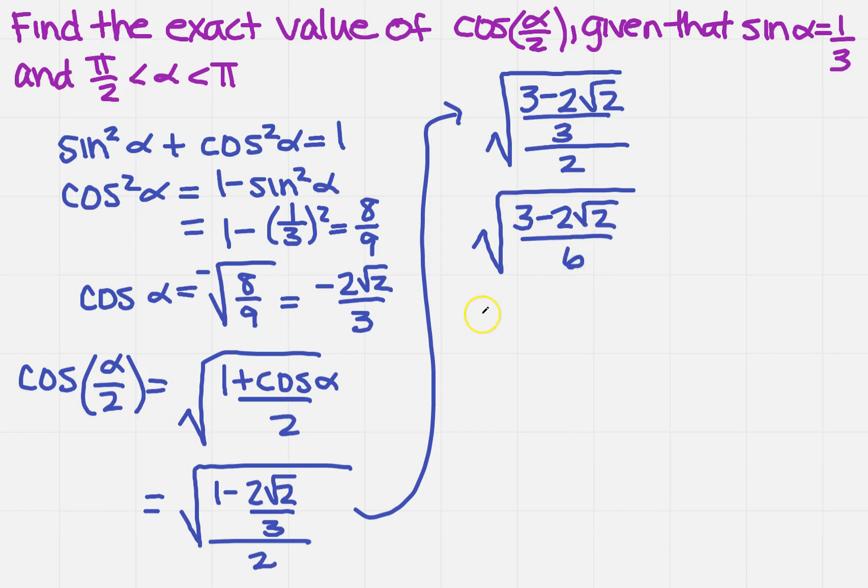Now what am I going to do? Well, I can write those with a radical on the top and the bottom. So I've got 3 minus 2 square root of 2 over the square root of 6, but I can't have a radical on the bottom, right? So I'm going to need to rationalize the bottom by multiplying by the square root of 6 over the square root of 6.